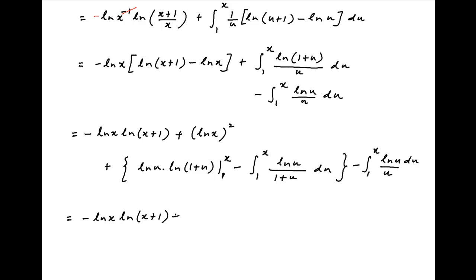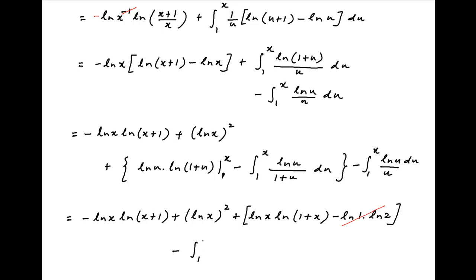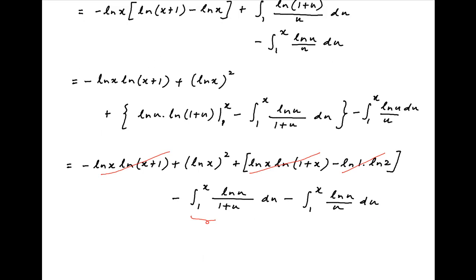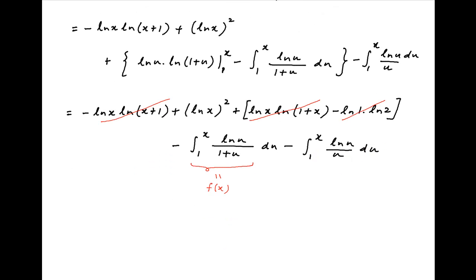This equals −ln(x)·ln(x+1) + ln²(x), plus, putting in the limits, ln(x)·ln(1+x) minus ln(1)·ln²(x), minus the integral from 1 to x of ln(u)/(1+u) du, minus the integral from 1 to x of ln(1+u) du, minus the integral from 1 to x of ln(u)/u du. The first and third terms cancel. Notice that the integral from 1 to x of ln(u)/(1+u) du equals f(x) as defined in the problem. Therefore f(1/x) simplifies to ln²(x) − f(x) − the integral from 1 to x of ln(u)/u du.